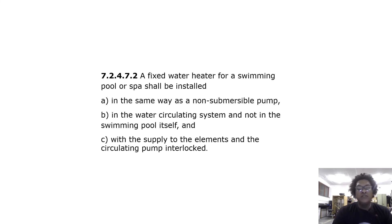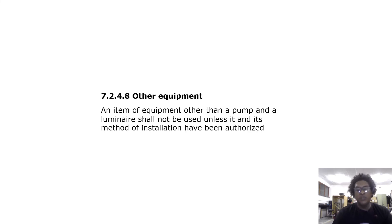A fixed water heater for a swimming pool or spa shall be installed in the same way as a non-submersible pump — in the water circulating system and not in the swimming pool itself — with the supply to the elements and the circulating pump interlocked. An item of equipment other than a pump or luminaire shall not be used unless its method of installation has been authorized.